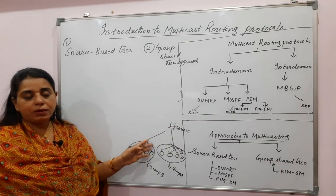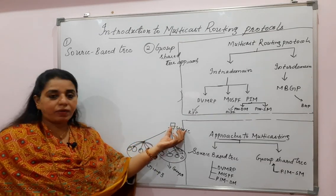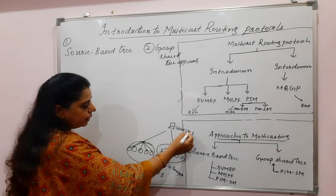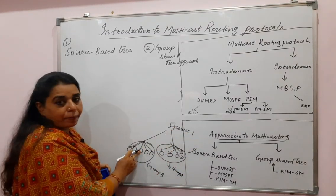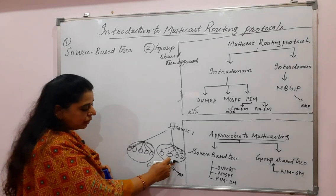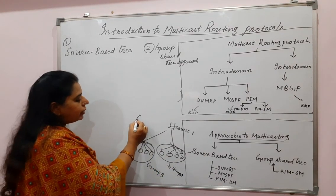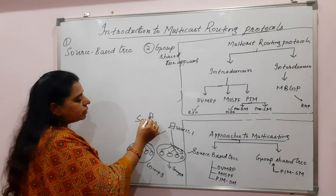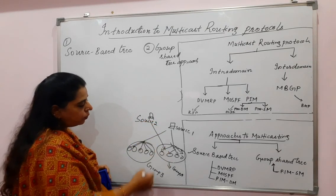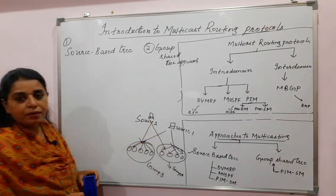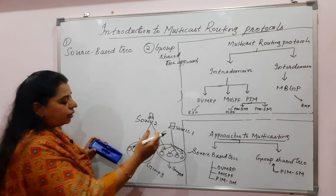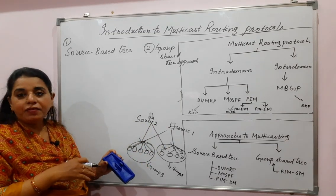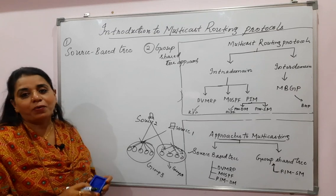There can be multiple sources as well. Source 1 may be sending to group A or group B, and source 2 may also be interested in sending to group A and group B. How many sources and how many groups exist in the entire network will decide the number of routing trees.